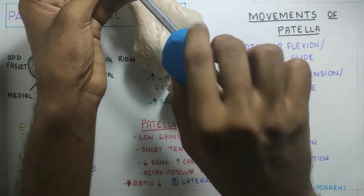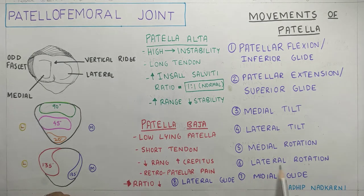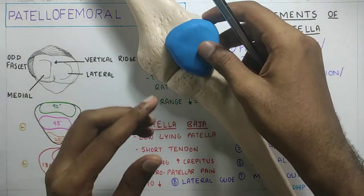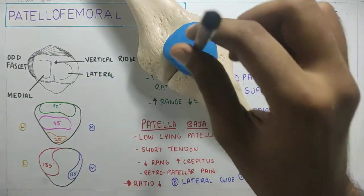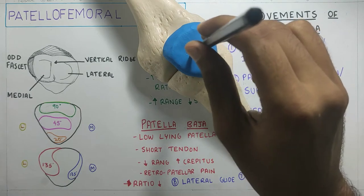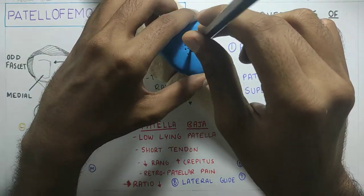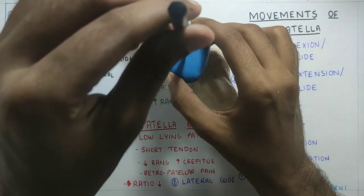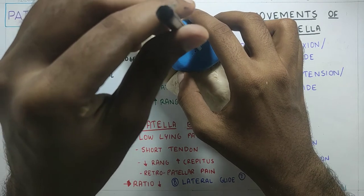The next movement is medial and lateral rotation of the patella, which occurs around the anteroposterior axis. When the pole of the patella moves medially, there is medial rotation of the patella. When the pole of the patella moves laterally, that is lateral rotation of the patella.